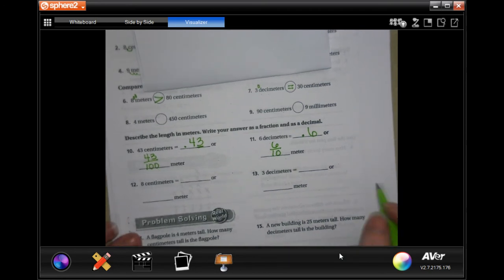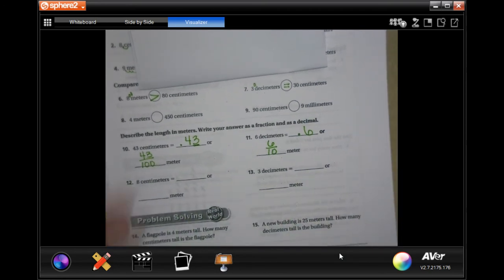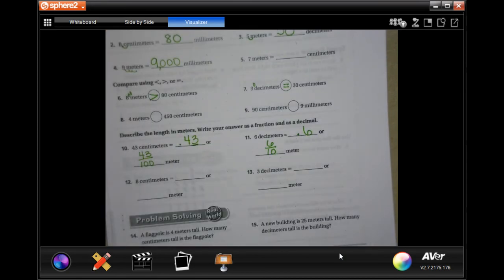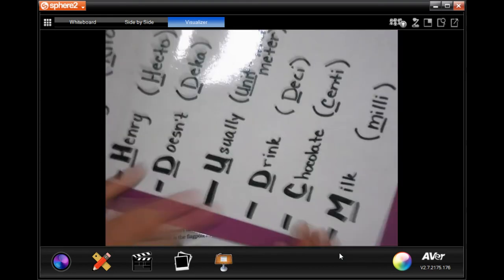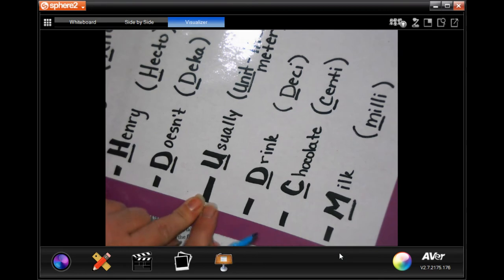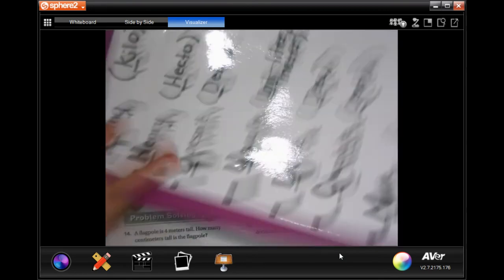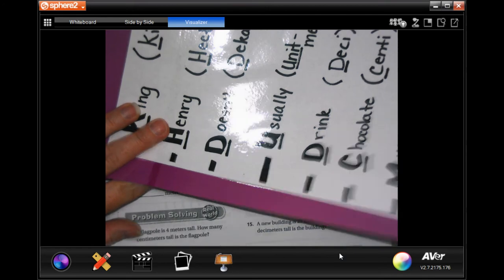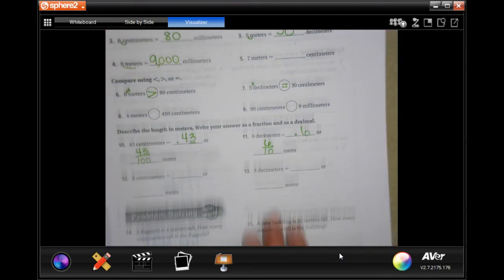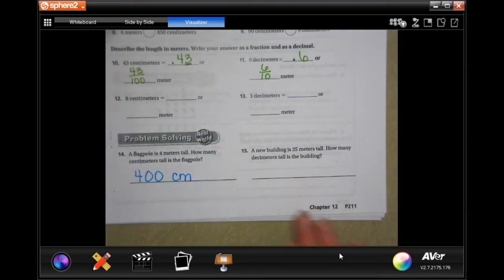All right, you guys try 12 and 13. We're going to go ahead and do number 14. It says a flagpole is four meters tall, how many centimeters? So four where our decimal would be right there, and we're going from meters to centimeters, so we're adding one, two zeros. 400 centimeters. Oops sorry I zoomed in so you can see it, now you can't.